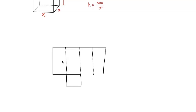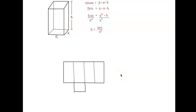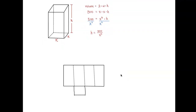Imagine folding this net — fold it up and you get an open-top box. This side is x and this side is x, so the area of the square base equals x squared, because x times x is x².